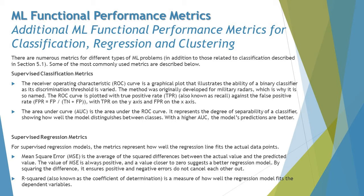The Receiver Operating Characteristics, referred to as the ROC curve, is a graphical plot that illustrates the ability of a binary classifier as its discrimination threshold is varied. The method was originally developed for military radar, which is why it is named Receiver Operating Characteristics. The ROC curve is plotted with True Positive Rate (TPR), also known as recall, on the Y-axis, against False Positive Rate (FPR) — measured as FP divided by (TN + FP) — on the X-axis.